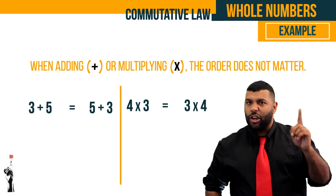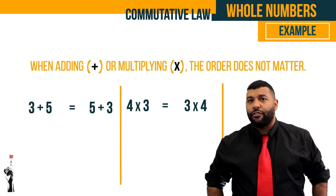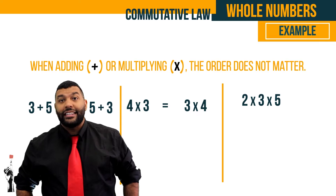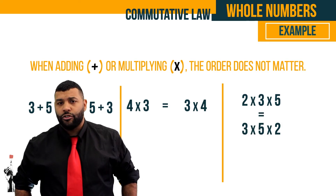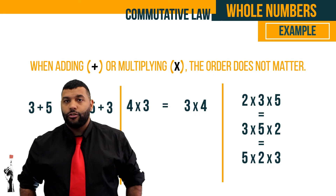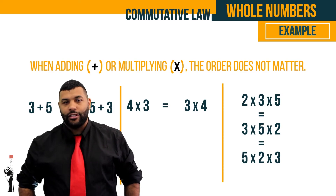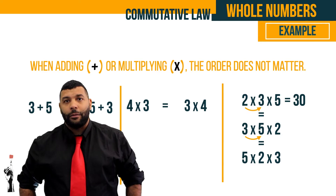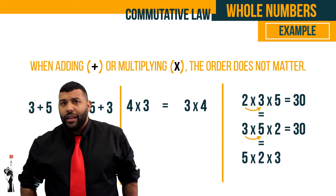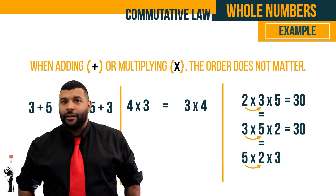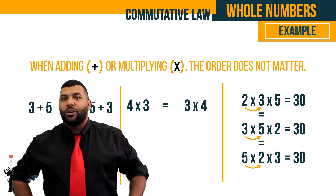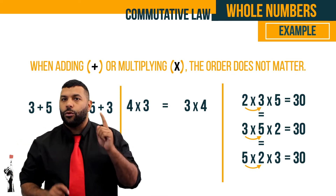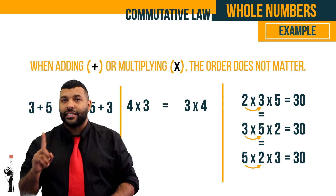Does this only work for two numbers? No it doesn't. For example, 2 times 3 times 5 is the same as 3 times 5 times 2 or 5 times 2 times 3. Breaking it down: 2 times 3 is 6, multiplied by 5 gives us 30. If we say 3 times 5, that's 15 multiplied by 2 gives us 30. Or 5 multiplied by 2 is 10 and 10 multiplied by 3 is 30. It doesn't matter in which order we multiply — we will always get the same result. This is the commutative law.